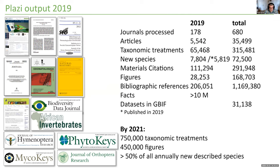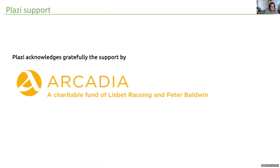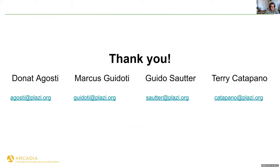By 2021 we hope to liberate in total 750,000 taxonomic treatments and 450,000 figures, representing about 50 percent of all annually newly described species. We hope this convinces the community that this is the way forward for publishing taxonomic works. I would like to thank Arcadia for their very generous support — I consider it a really big contribution toward the biodiversity community and toward changing the way we make our data accessible to the world.